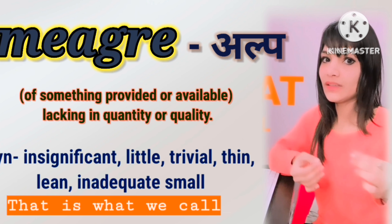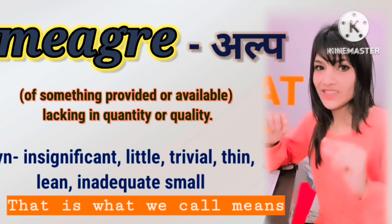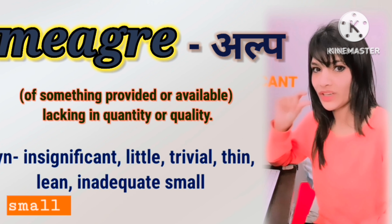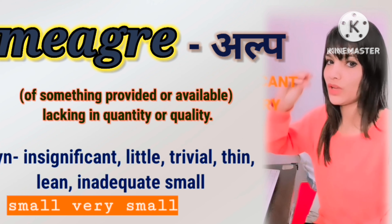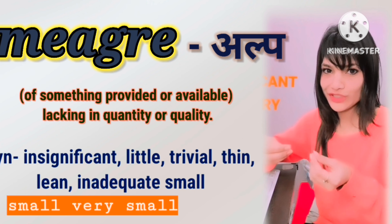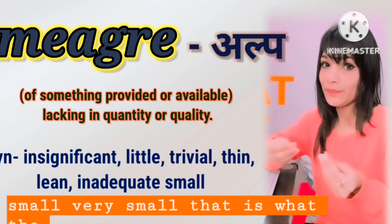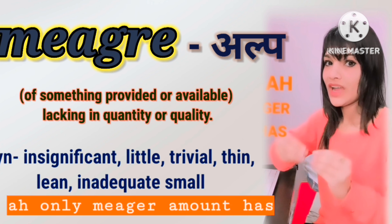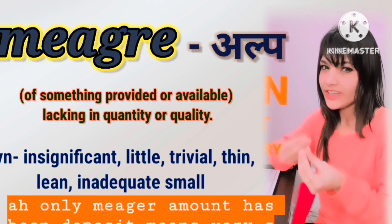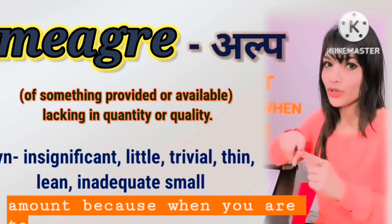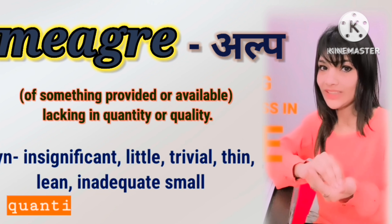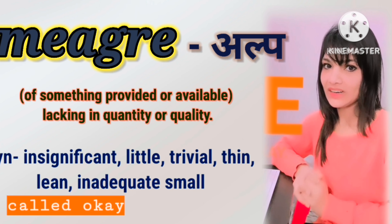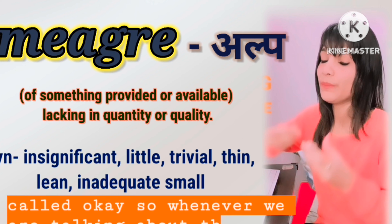The next word is 'meager.' Meager means something which is less in quantity or quality. Meager means koi bhi cheez ka insignificant hona, small hona, trivial hona — very small. For example: only a meager amount has been deposited, meaning a very small amount.